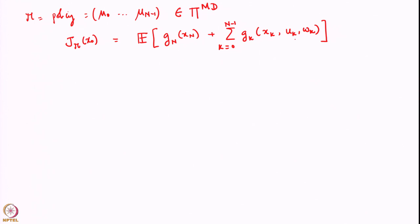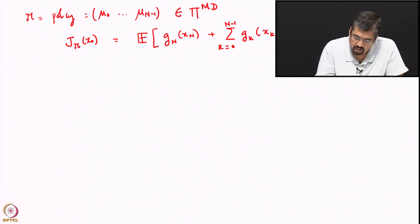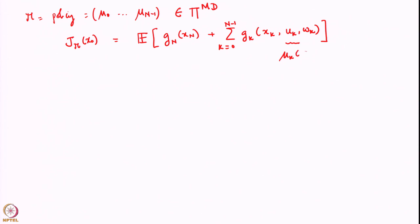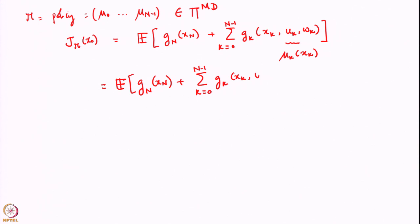Since we are choosing a Markov policy, u_k here is a function mu_k of x_k. Therefore this cost can be written equivalently as g_n(x_n) plus the sum from k=0 to n-1 of g_k of x_k, mu_k(x_k), w_k. The expectation here is over all the things that are random in this problem.